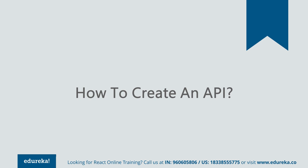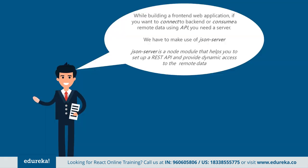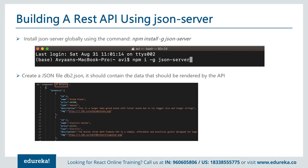So ultimately we have four different ways to call it. Now, how do you get an API while building a front-end web application? If you want to connect to a back-end and consume data using APIs, you need a server. We can make one using JSON Server. JSON Server is a Node module that helps set up a REST API and provides dynamic access to remote data.